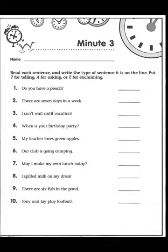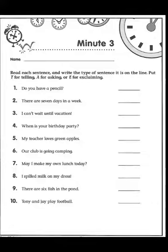All right, so now take out Grammar Minute Three and put your name at the top of course. It says: read each sentence and write the type of sentence it is on the line. Put T for telling, A for asking, or E for exclaiming. So if it's just a regular telling sentence, write a T on the line. That's it, boys and girls.